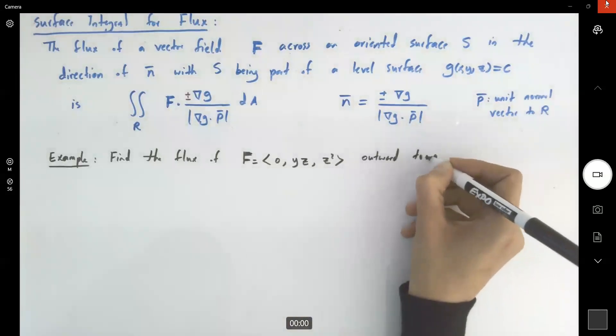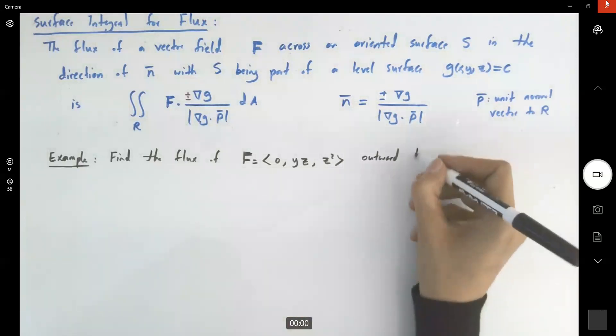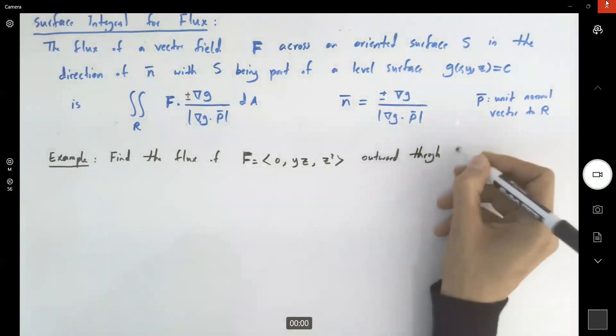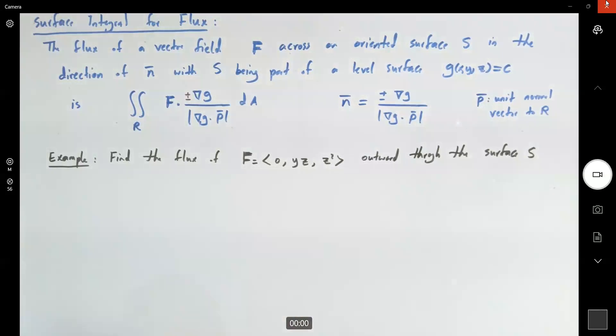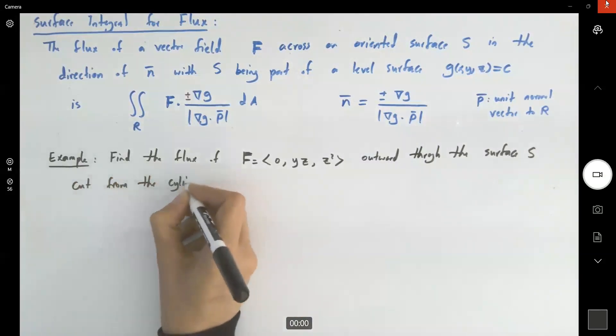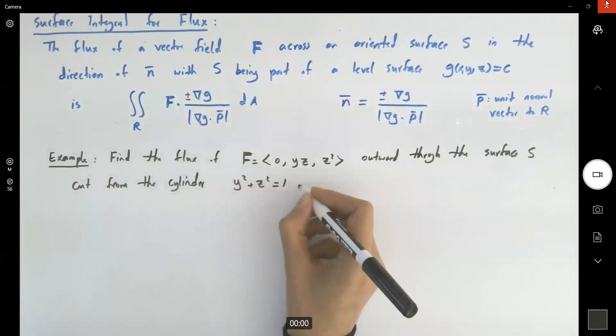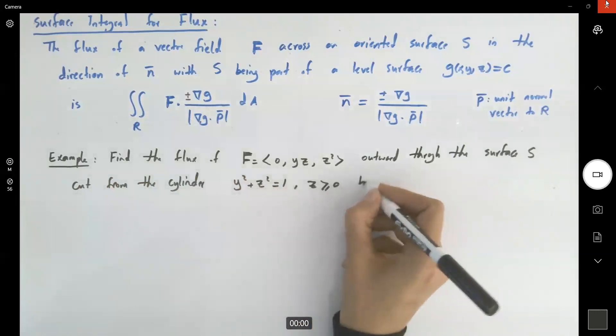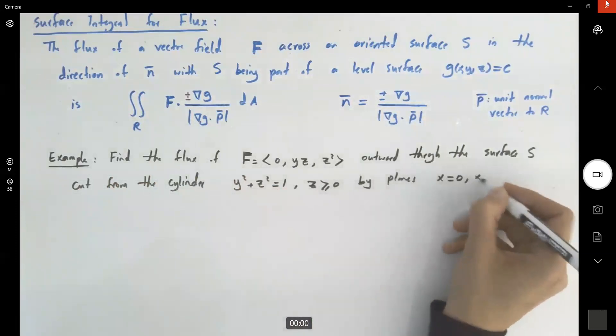Outward through the surface S cut from the cylinder y² + z² = 1, z is positive, by planes x = 0 and x = 1.